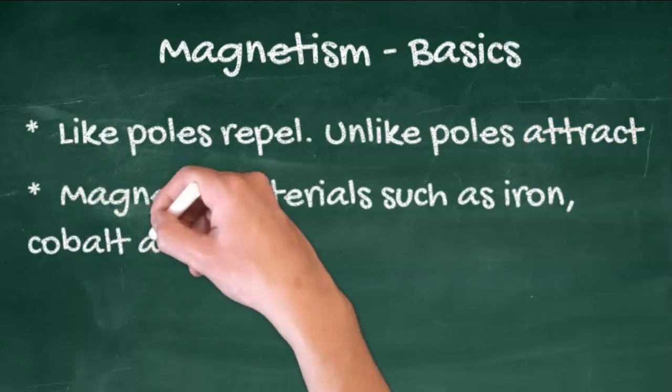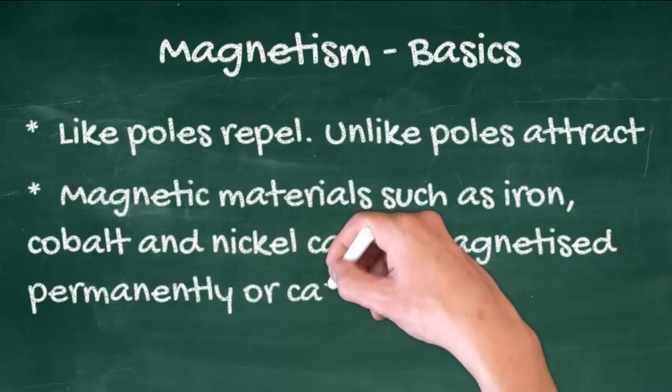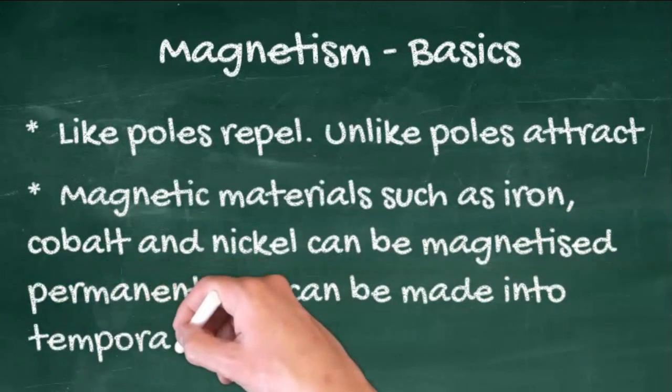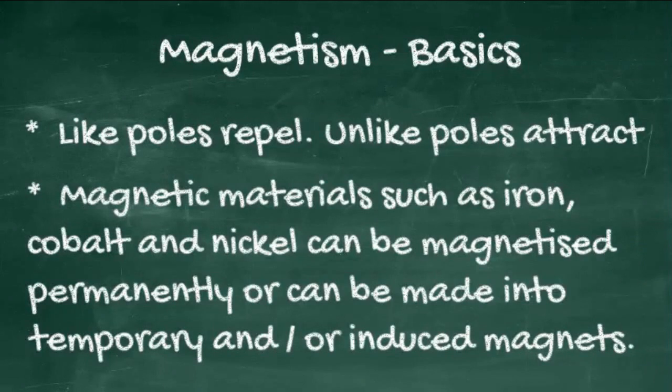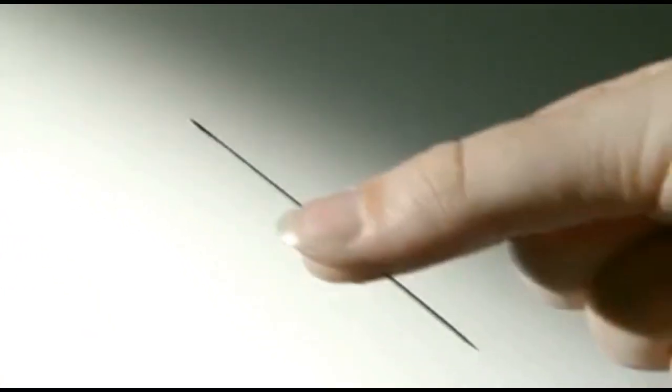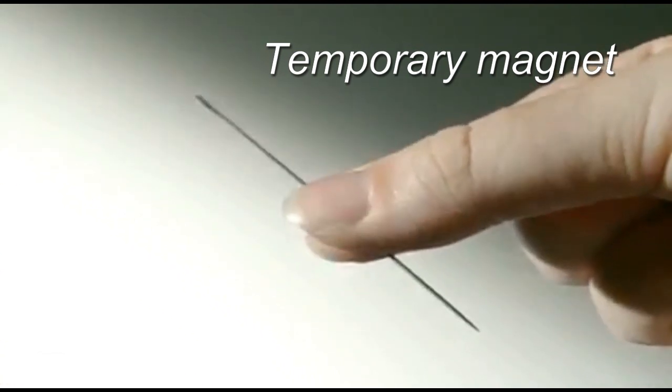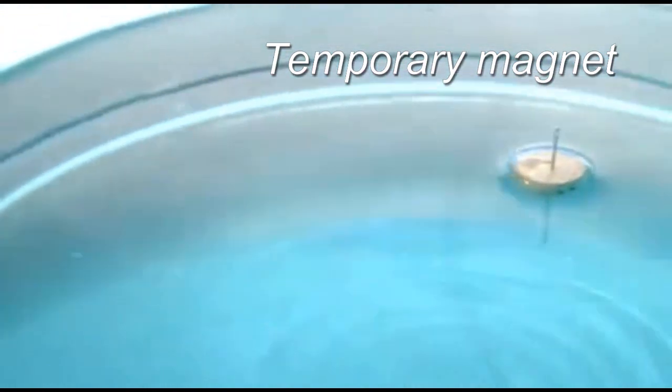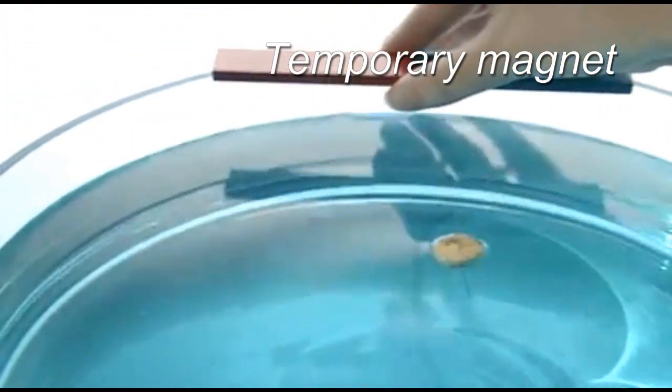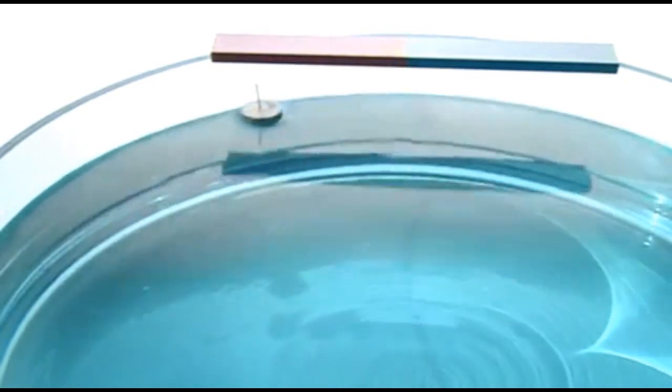Magnetic materials such as iron, cobalt and nickel can be magnetised permanently or they can be made into temporary and or even induced magnets. A needle is made magnetic by stroking a magnet past it. Stick it through a piece of cork and it floats. Just like a compass, it's affected by the invisible forces of a magnetic field.